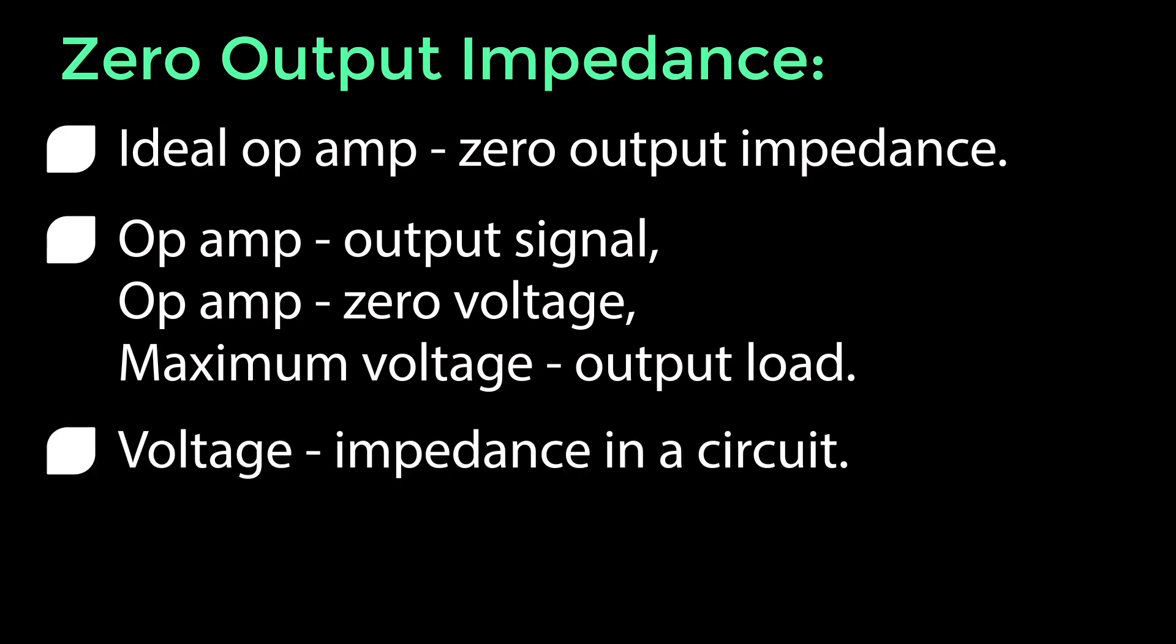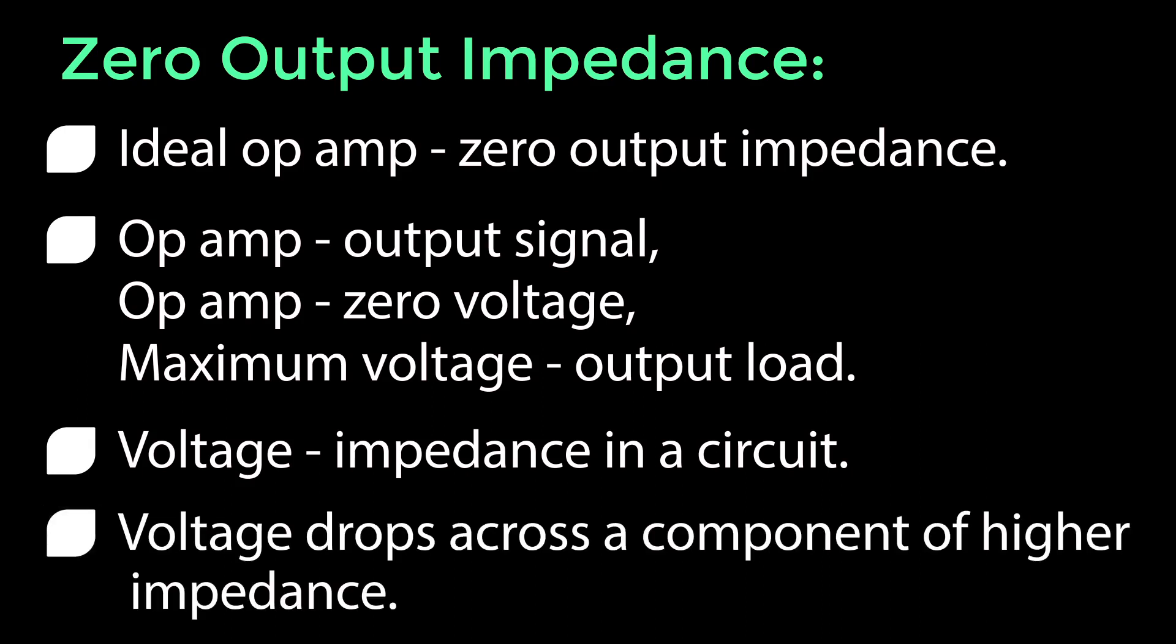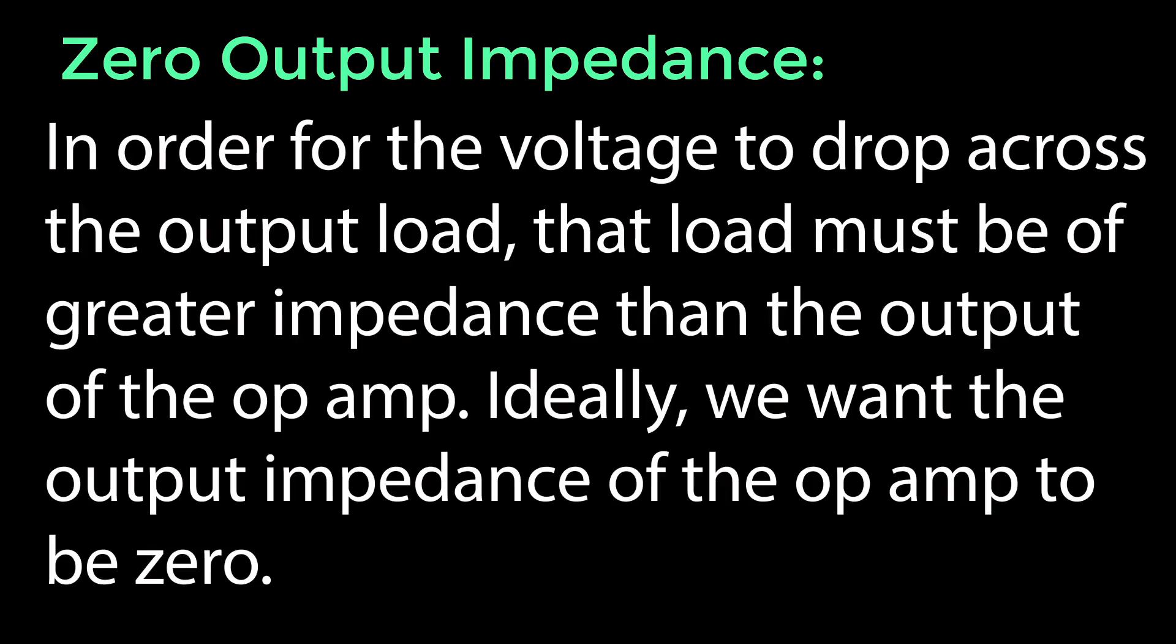Voltage is divided in a circuit according to the amount of impedance present in a circuit. Voltage drops across a component of higher impedance. In order for the voltage to drop across the output load, that load must be of greater impedance than the output of the op-amp. Ideally, we want the output impedance of the op-amp to be zero.